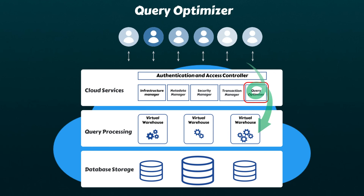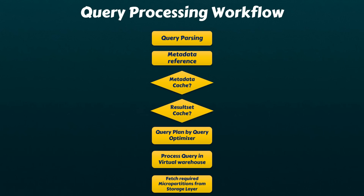Let's take a closer look at the query processing workflow. When users submit SQL queries from Snowsight, CLI, or any other third-party APIs, Snowflake's Query Optimizer engine first parses them. Then, the Metadata service is consulted to gather information about the tables, columns, and other objects involved in the query. Once the optimizer has this information, it checks if the query can be answered using the metadata cache or the result set cache. If so, the query results are retrieved from these caches and sent to the user.